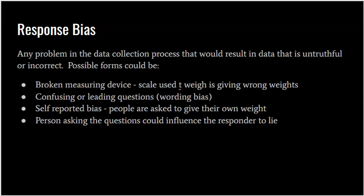Self-reported bias is another form of response bias. If people are asked to give their own weight or height, whether intentionally or not, those answers could be untruthful or incorrect. You need to give them a scale to stand on and use a measuring tape — that way you know the answers are correct. Also, the person asking the questions can influence the responder to lie. Think about when a dentist asks 'Do you floss your teeth?' — you might say yes even if that's untrue. Or if a teacher asks students to raise their hand if they do drugs, very few will respond honestly in that setting.